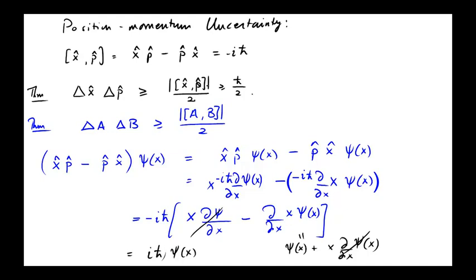Okay, so that's the position-momentum-uncertainty relation. It says that the spread in the position times the spread in the momentum is at least the uncertainty in the position times the uncertainty in the momentum. The product is at least h-bar over 2.